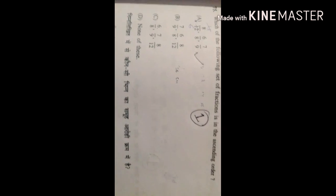And in 75th question, we have to find the fractions in ascending order and the correct answer is A. Option A is correct.